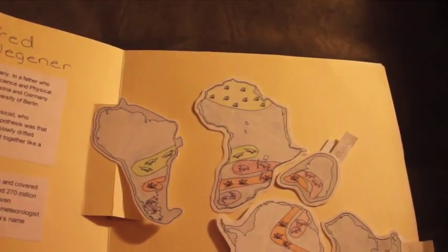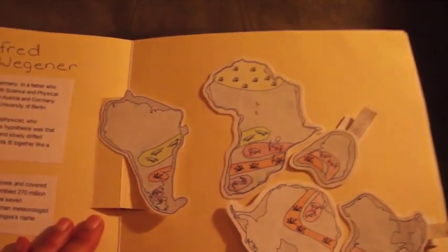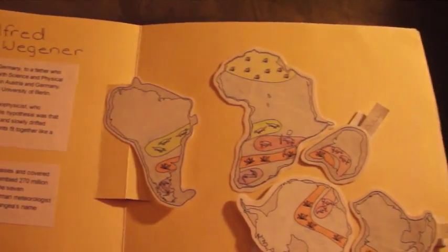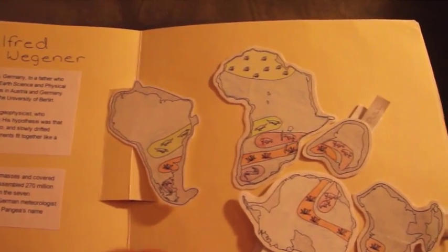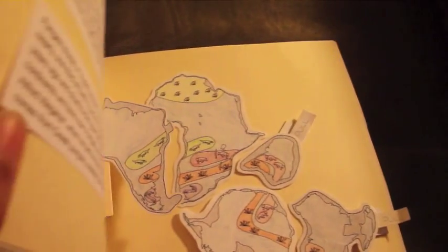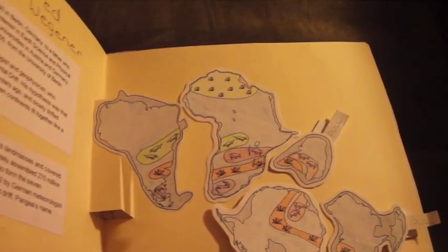Okay, the next page—and they're not done in order in terms of construction in class. We start with a little bit more complicated than the first page. So the next page is Pangaea, talking about Alfred Wegener and his theory. And then if you notice when we open it up, the South American continent moves away from Africa,